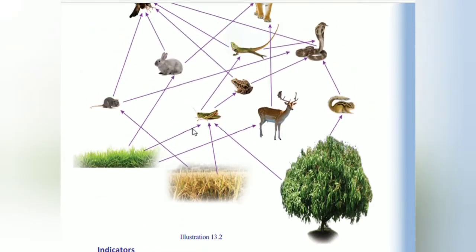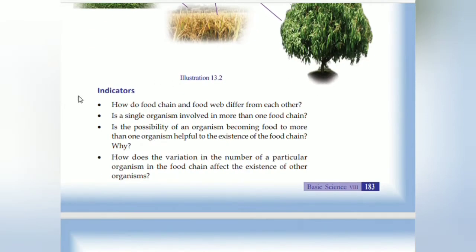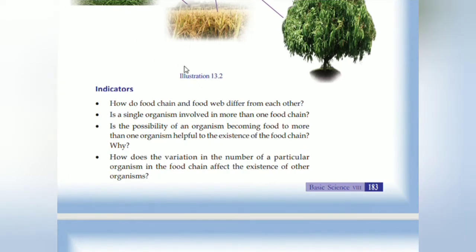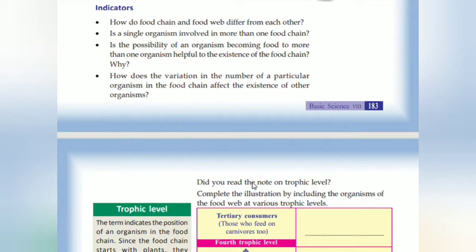We can see that the rats depend on the food grains, and in turn depend upon the snake. How do food chain and food web differ from each other? Is a single organism involved in more than one chain? How does the variation in the number of a particular organism in the food chain affect the existence of the organism?